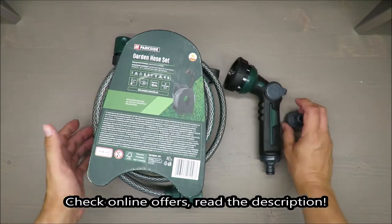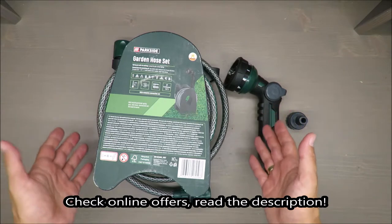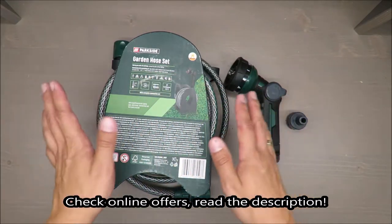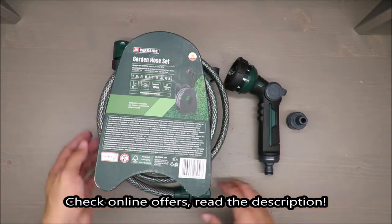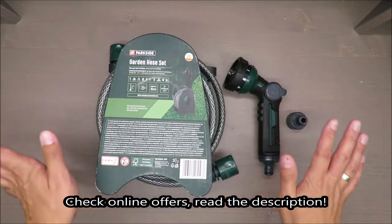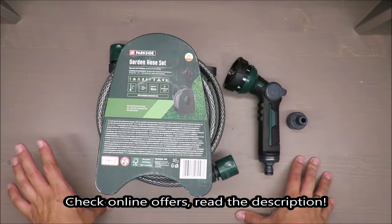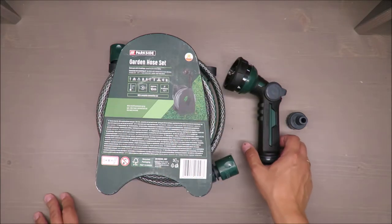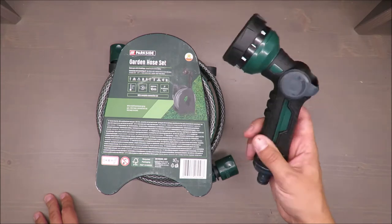Hello everybody, this is Out of the Box Unboxing. In today's episode I'm going to review a garden hose set from Parkside, available at Lidl. My quick judgment: I'm very positively surprised about the hose itself, but I'm disappointed about this nozzle.